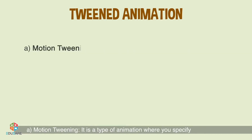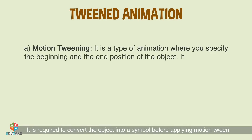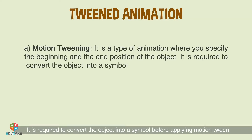Motion Tweening: It is a type of animation where you specify the beginning and the end position of the object. It is required to convert the object into a symbol before applying motion tween.